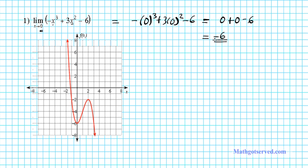So how can we find this result graphically? If you're looking at the graph, the graph of this function is this expression right here. Let's go ahead and graph it and label it — this is y equals negative x to the third plus three x squared minus six. What this problem is saying is: as x approaches zero from both sides, what y value do you approach? The easiest way is to trace x equals zero to the graph. If I trace x equals zero to the graph, I'm going to end up at a defined point.